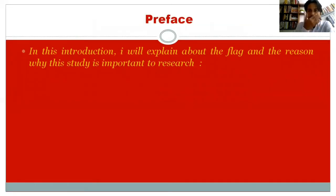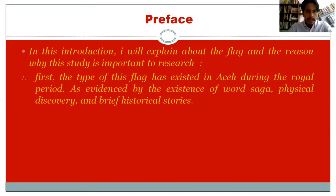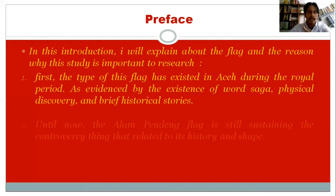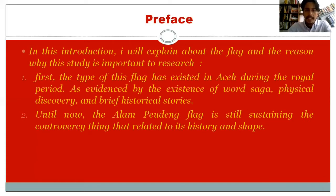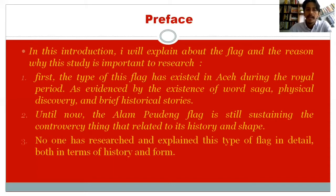In this introduction, I will explain about the flag and the reason why this study is important to research. First, this type of flag has existed in Aceh during the Royal period, as evidenced by the existence of world saga, physical discovery, and brief historical stories. Until now, the Alam Peudeung flag is still sustaining controversy related to its history and shape, and no one has researched and explained this type of flag in detail, both in terms of history and form.